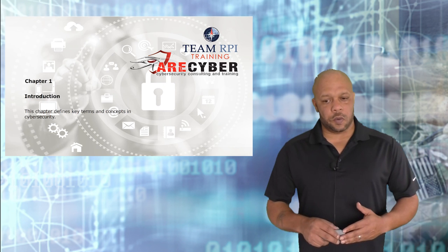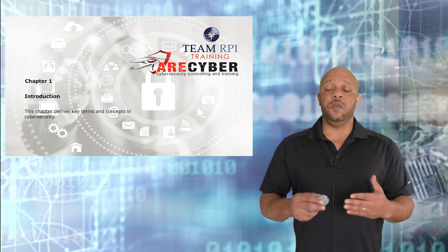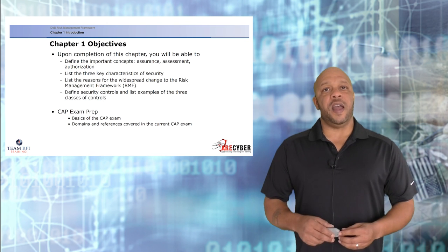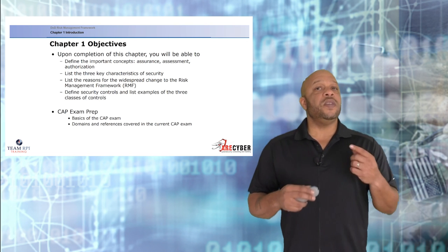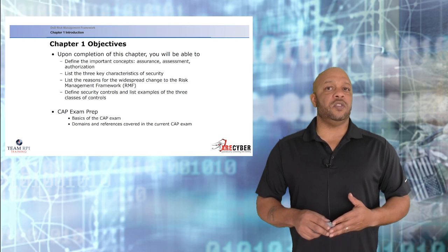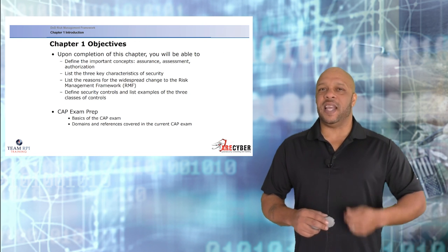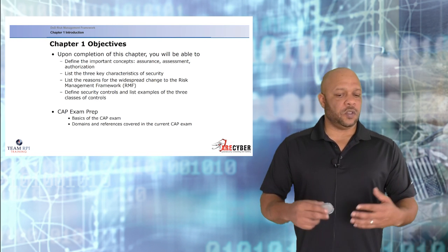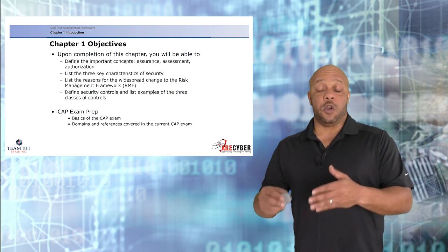In the first section, we're going to deal with a basic introduction. We're going to define some key terms and concepts that you need to know as you implement the risk management framework. When we're done, you'll be able to identify the important concepts of assurance, assessment, and authorization; list the three key characteristics of security; list the reasons for widespread change of the risk management framework; and define the security controls and list examples of at least three classes of controls. If you're studying for the ISC squared CAP exam, this section will cover the basics of the exam and all the references covered in the current CAP exam.